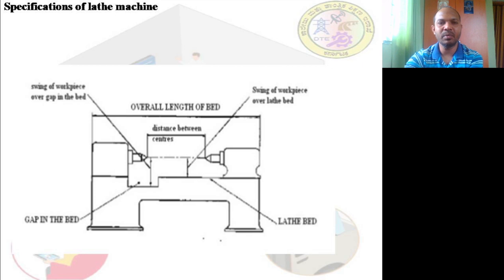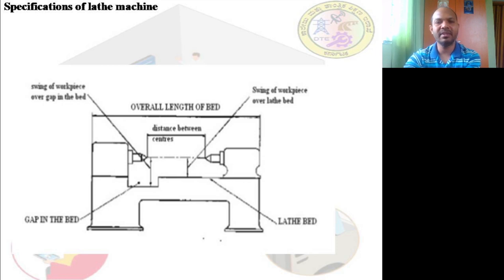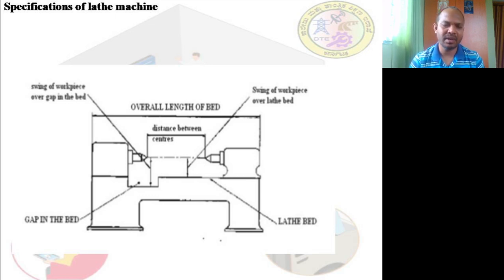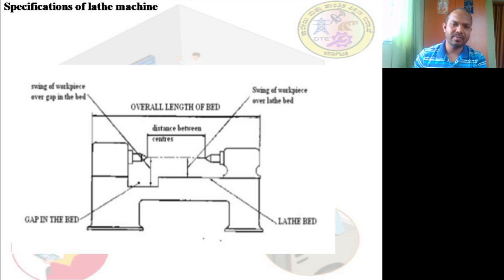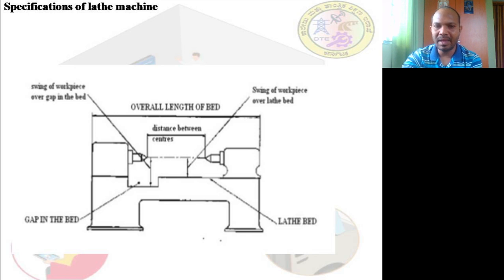There is a topic in your syllabus that deals with the specification of the lathe. Every machine, whether a machine tool or any other type, will have its own specifications — these are nothing but identifying features for a lathe. Just as you see specifications like '1 ton of refrigeration' or '1.5 ton of refrigeration' when purchasing an air conditioner, similarly the lathe machine has its own specifications. In this figure, the overall length of the bed is given from the headstock to the tailstock.